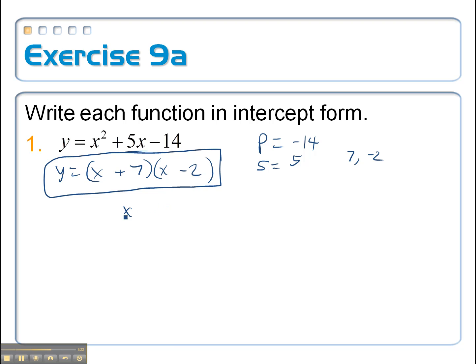If I wanted to find the vertex of this equation, the x coordinate comes from the average of those two. So negative 7 plus 2 divided by 2 equals negative 5 halves. And I take that negative 5 halves back into the equation and solve it for y.